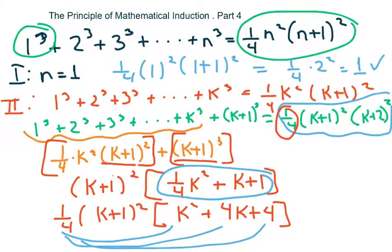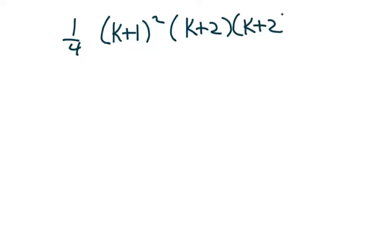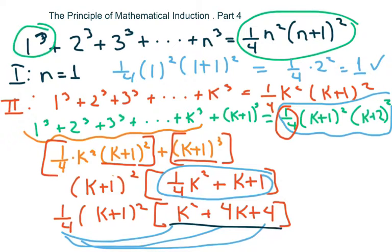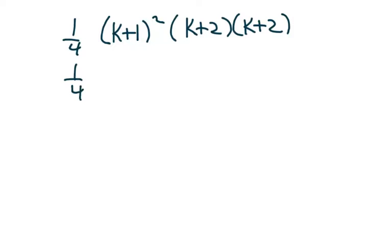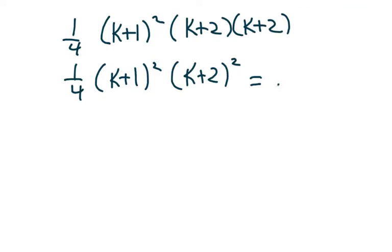Now we factor: one-fourth times (k plus one) squared times (k plus 2)(k plus 2), which yields one-fourth times (k plus one) squared times (k plus two) squared. That does equal what we wanted, so it checks — conditions one and two both hold.